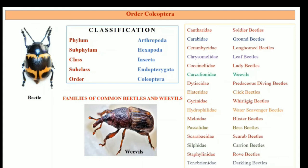Gyrinidae, which are the whirligig beetles, and water scavenger beetles; Meloidae, which are the blister beetles; Passalidae, the bess beetles; Scarabaeidae, which are the scarab beetles; Silphidae, which are the carrion beetles; Tenebrionidae, which are the darkling beetles. These are the families under the order Coleoptera.